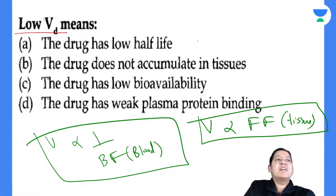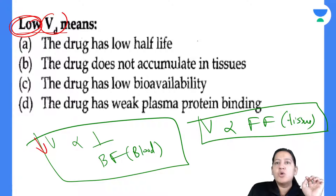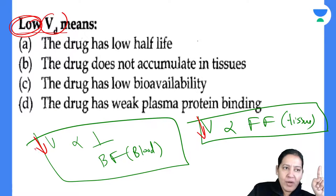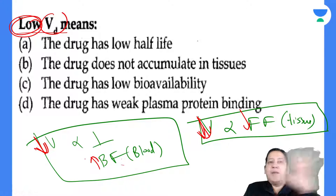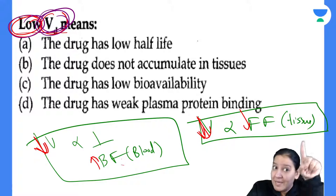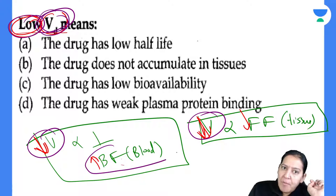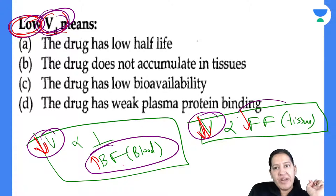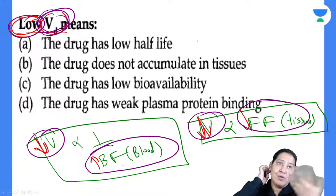Low volume of distribution means high bound form — and bound form is plasma protein binding. So it is not weak, it is high plasma protein binding. Option D with 'weak' is incorrect because it is reversed. If the option said 'high' instead of 'weak' then D would also be correct. Correct answer is B. Everyone give me a thumbs up.